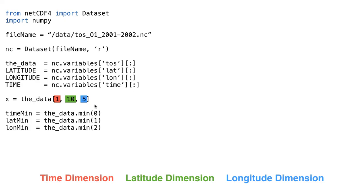The same idea applies with the min function. If I'm interested in the minimum value across every single timestamp, I say underscore_data.min(0) — the underscore_data is defined up here — and store the result in time_min, which is a two-dimensional array. Taking the minimum across all the latitudes gives lat_min, again a two-dimensional array going from three-dimensional to two-dimensional. And the minimum across all the longitudes is stored in the variable long_min.